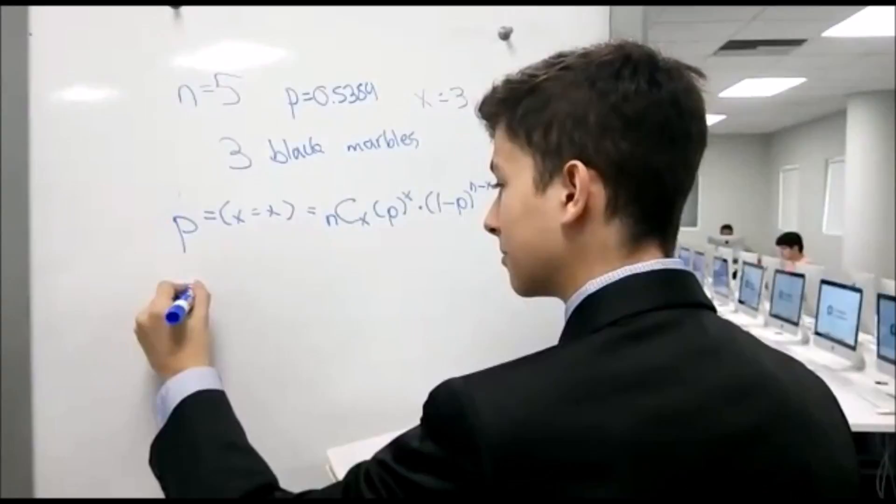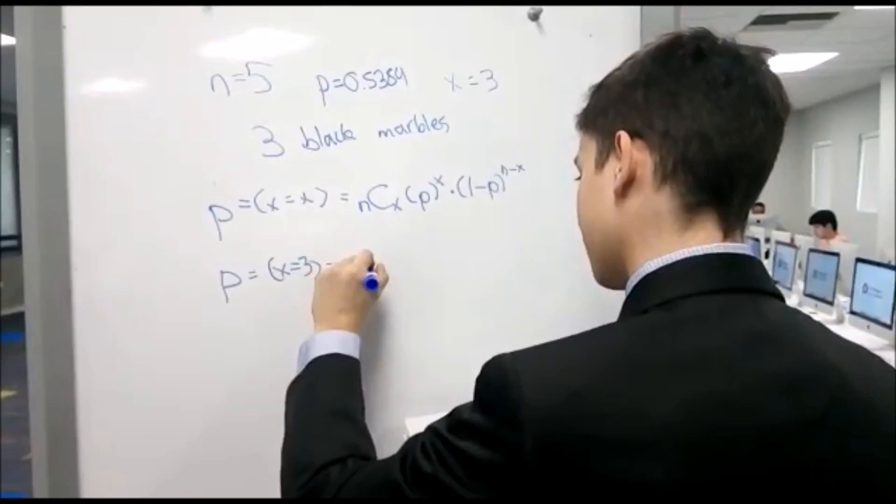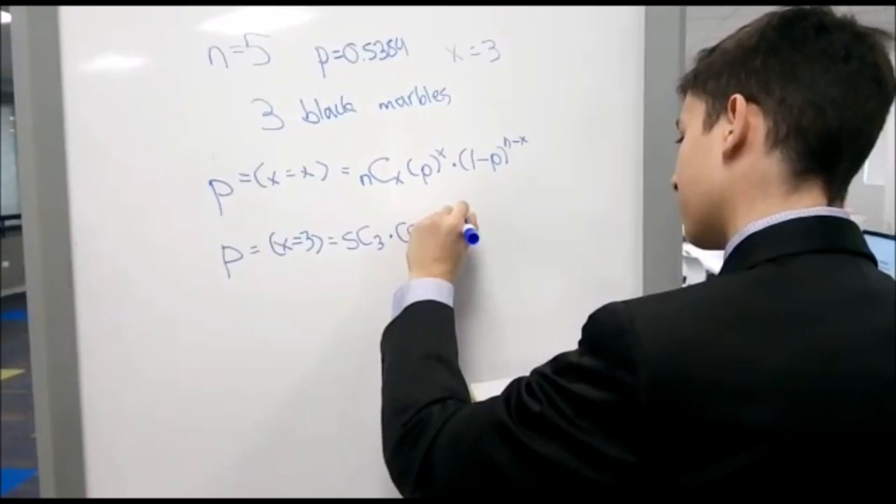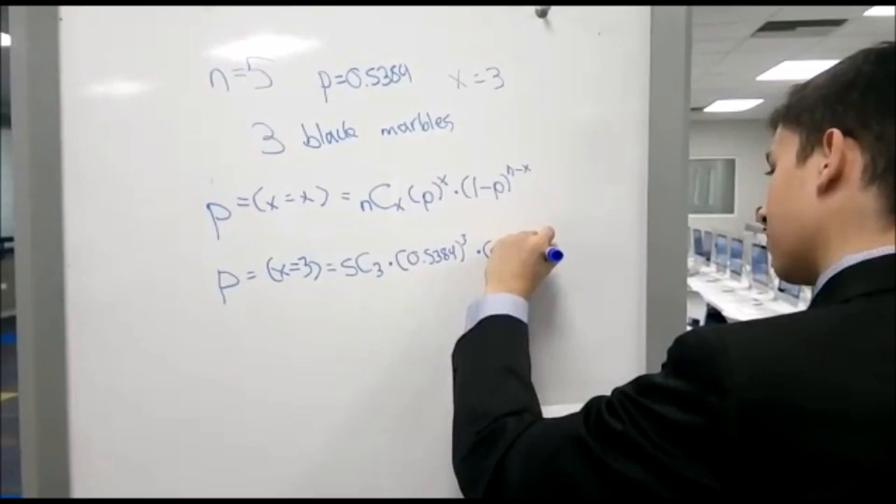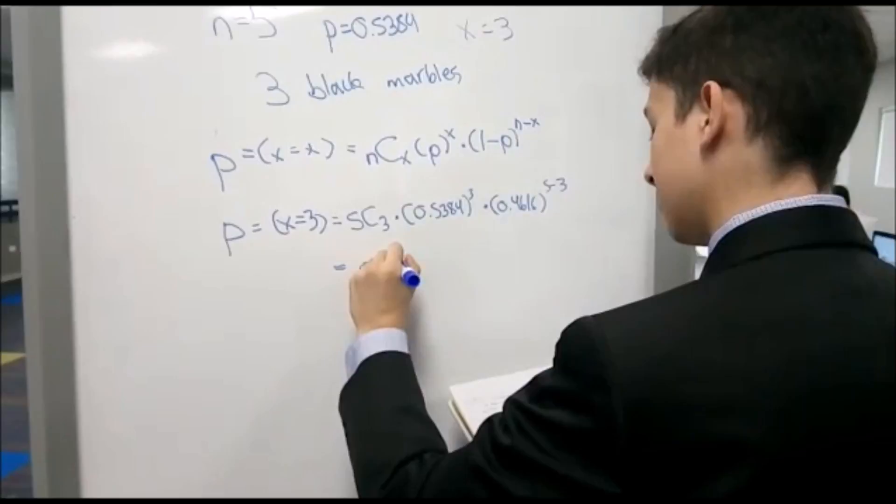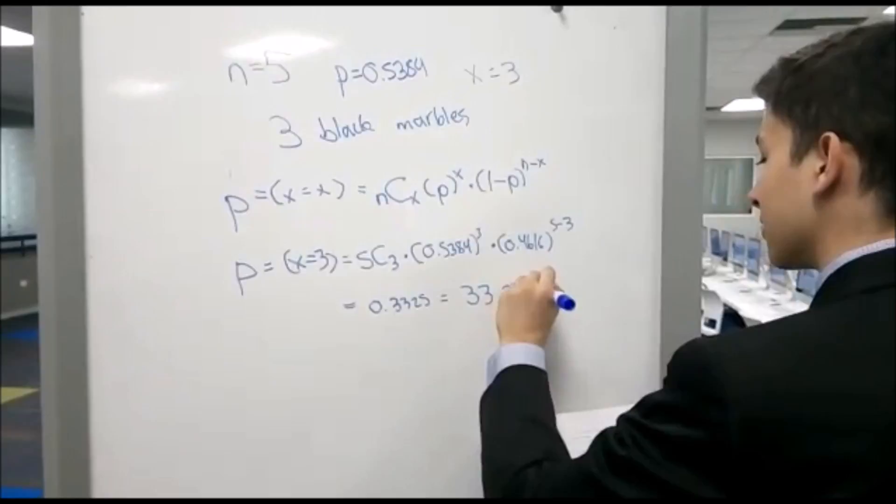And we can substitute the values. And the answer would be 0.33, which is equal to 33.25%. There you have the first answer for A.